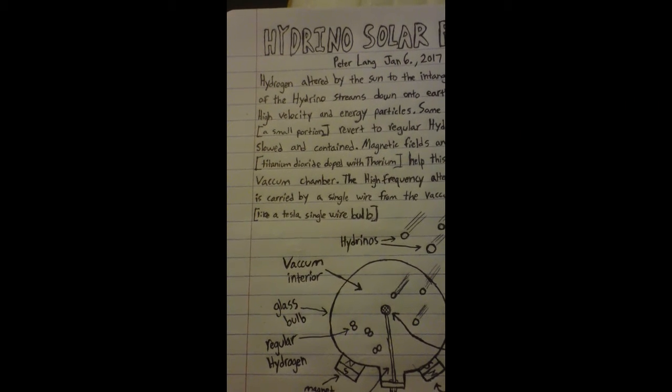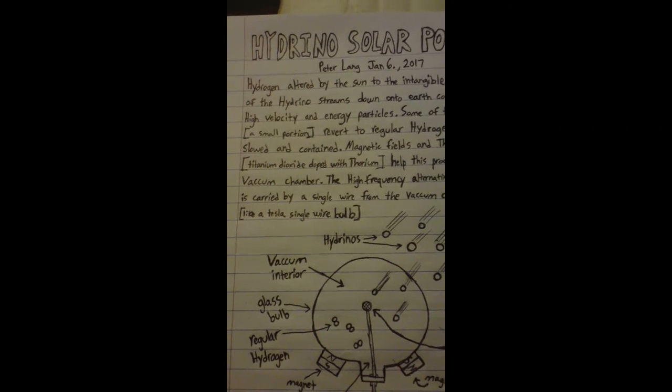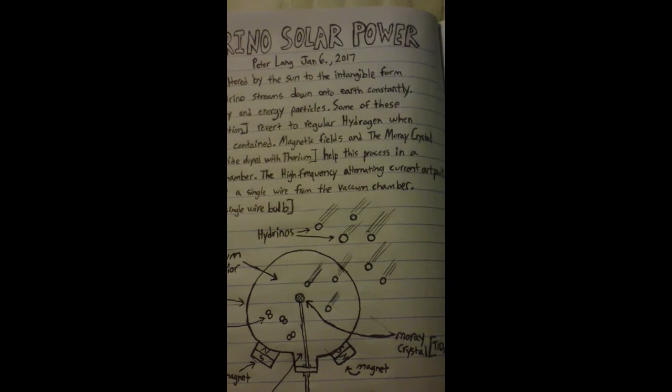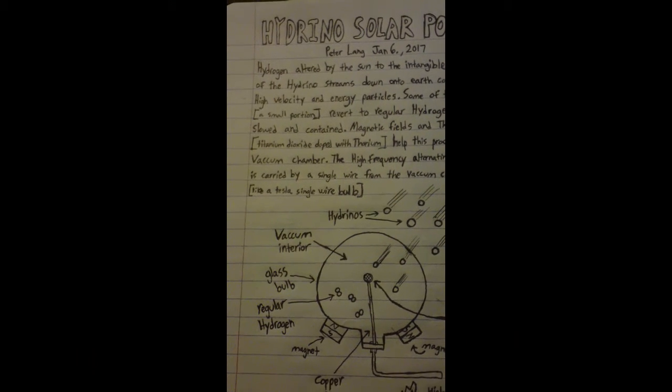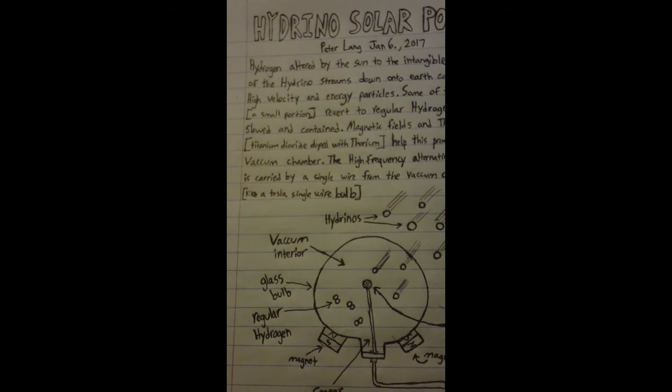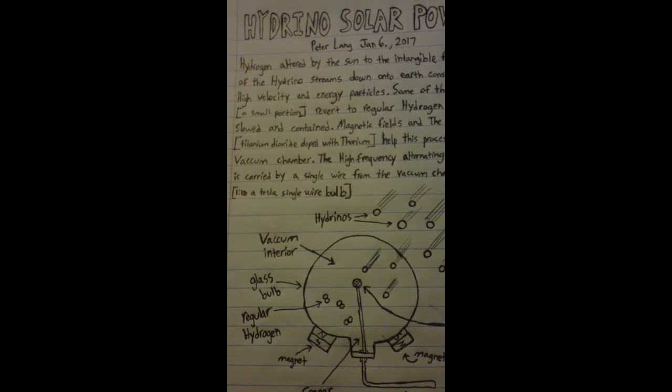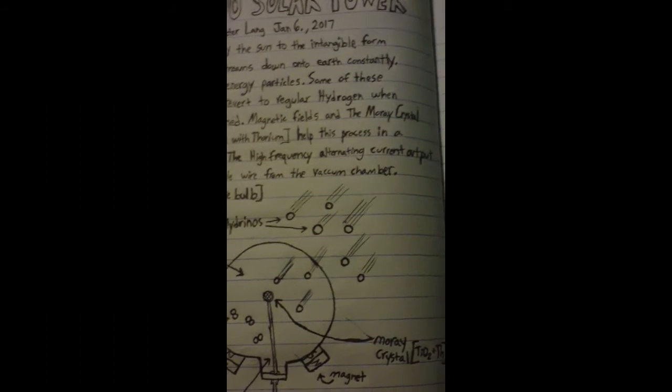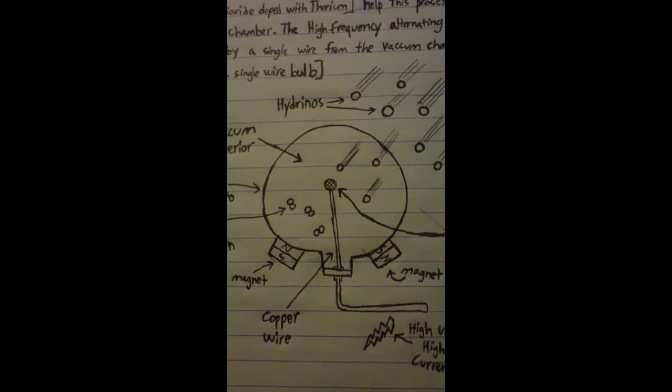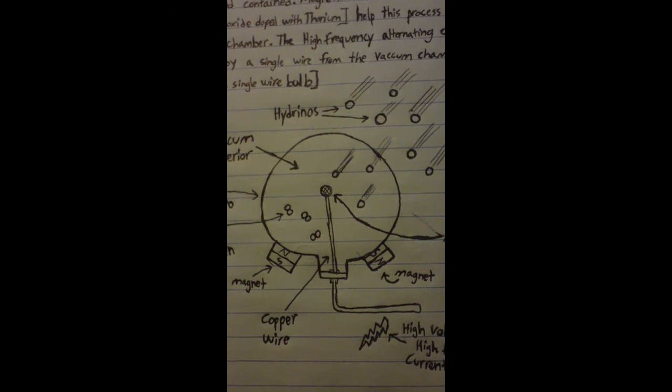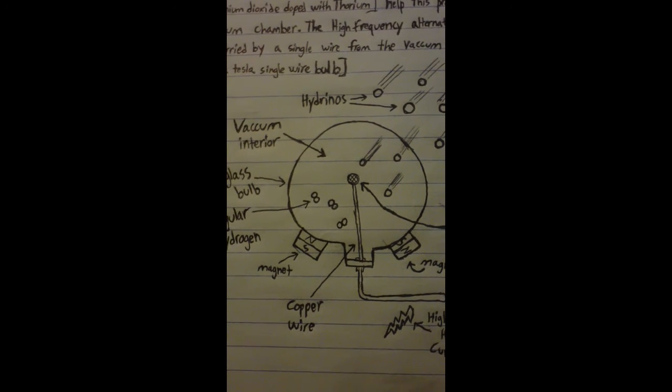A small portion of the dark matter, hydrinos, converts back into regular hydrogen on Earth. It usually does this when it's slowed down and contained. This apparatus here slows down and contains some of the hydrinos, which then revert back into regular hydrogen.